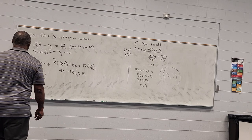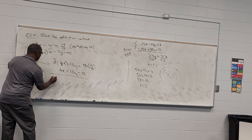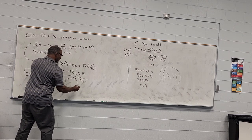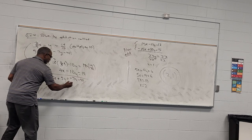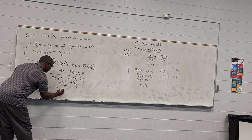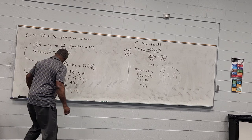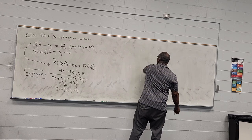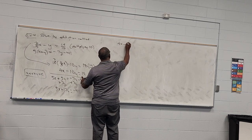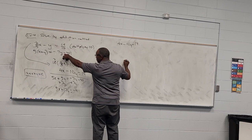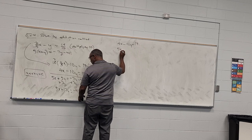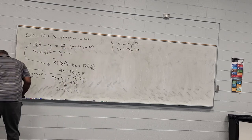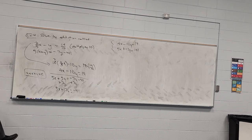For the second equation, distribute: 5 times x is 5x, 5 times y is 5y, and the right side is negative 7y minus 41. Adding 7y to both sides gives 5x plus 12y equals negative 41. So the cleaned-up system is 4x minus 10y equals 19, and 5x plus 12y equals negative 41.